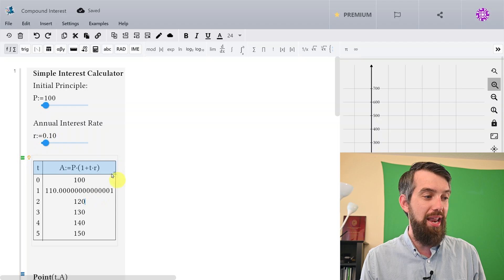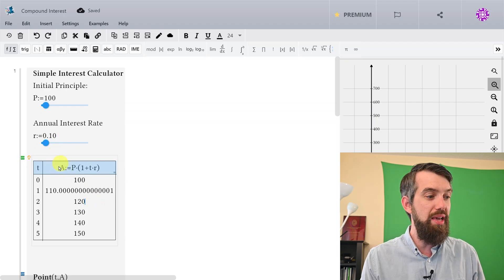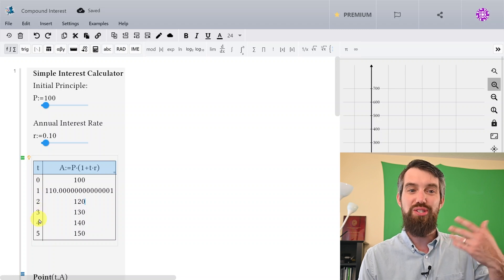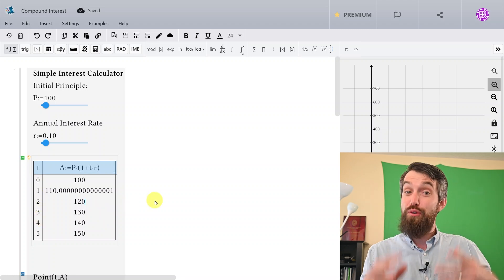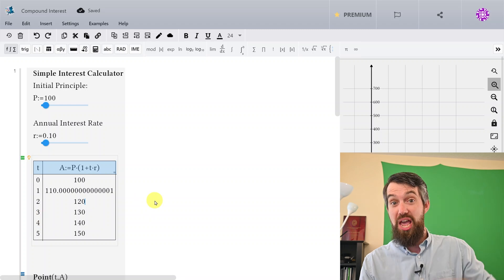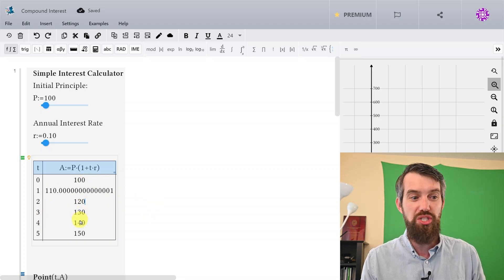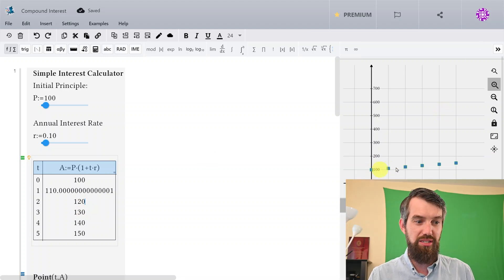And then down here you get a nice table that tells you the amount A in years 0, 1, 2, 3, 4, and so on. What you can see is that for simple interest, it just goes up 10 bucks a year. 10, 110, 120, 130, 140, and so on. And on the right we see a nice little plot of how it grows as well. Pretty simple.